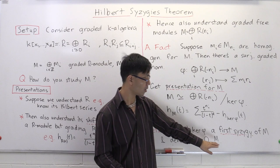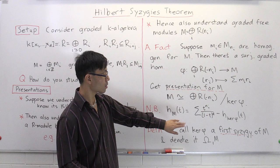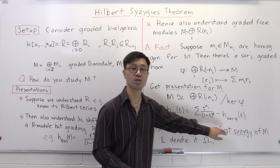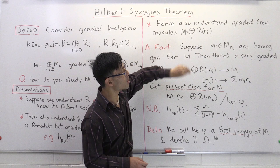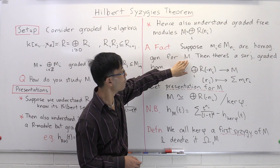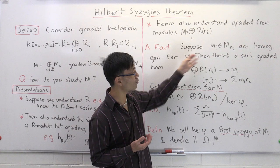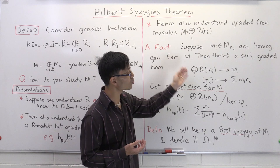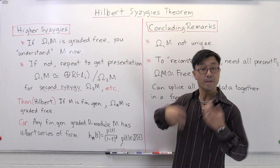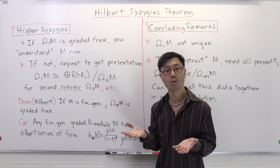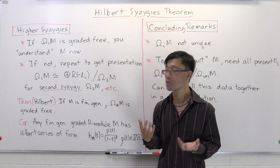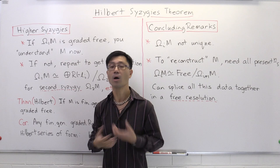We call it a first syzygy rather than the first syzygy because there is actually a choice as to what it is. We form it by picking a set of homogeneous generators for M, and of course there are lots of different sets of homogeneous generators, each producing a different surjective graded homomorphism from a different graded free module, and hence a different kernel. If the first syzygy Ω₁(M) happens to be graded free, then we understand what it is, and hence we understand the original module M.